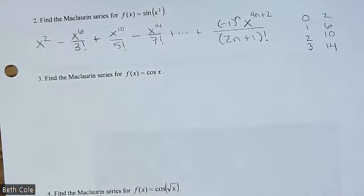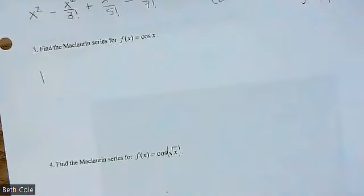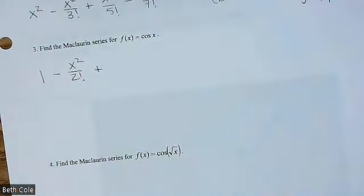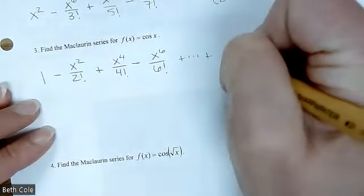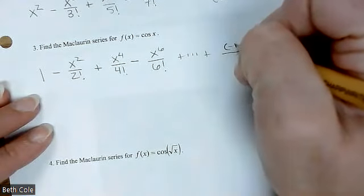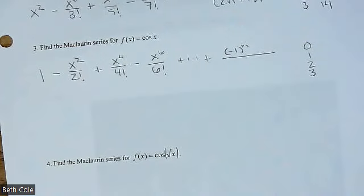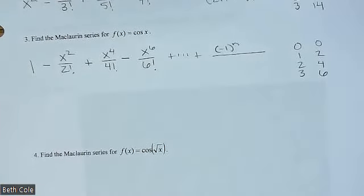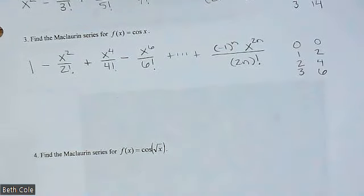For cosine — I left a lot of space because last year I made students do it from scratch. It's the same thing: it alternates, but you do all the even ones. The first one is 1 — it starts with x to the nothing — then minus x squared over 2 factorial, then plus x to the 4th over 4 factorial, minus x to the 6th over 6 factorial. General term: negative 1 to the n. Write 0, 1, 2, 3 off to the side — the powers are 0, 2, 4, 6 — so x to the 2n, and then 2n factorial on the bottom.